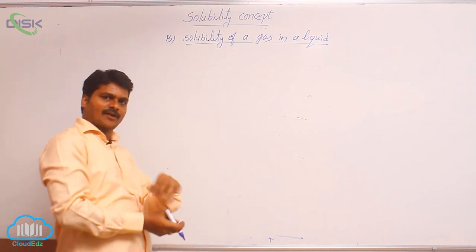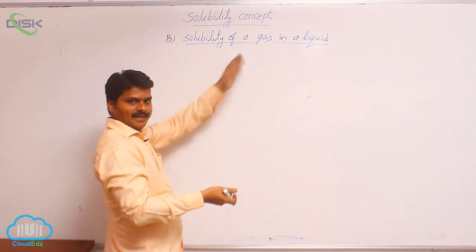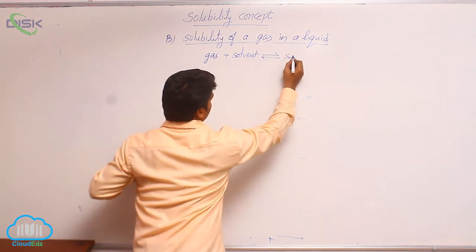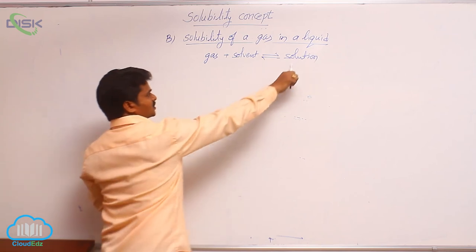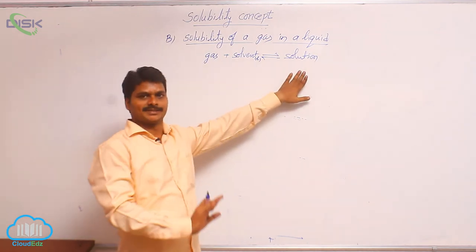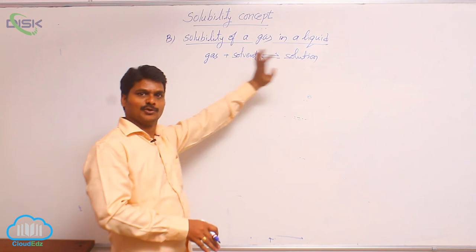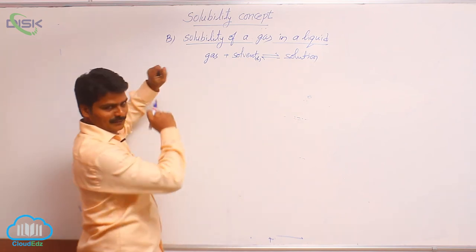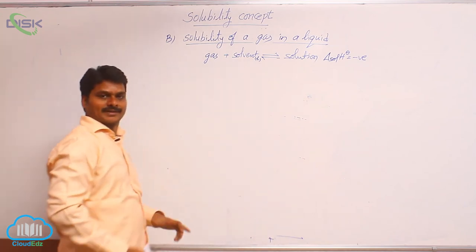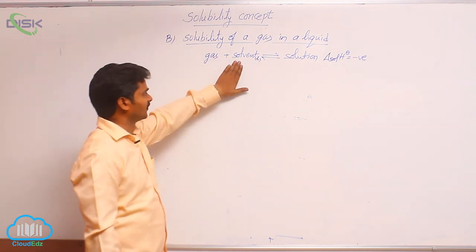In a saturated solution of a gas, there exists equilibrium between dissolved gas and undissolved gas: gas + solvent ⇌ solution. The state of solution is the state of solvent; since the solvent is liquid, the solution is also liquid. For this type, the enthalpy of solution, ΔsolH°, is always negative (exothermic).